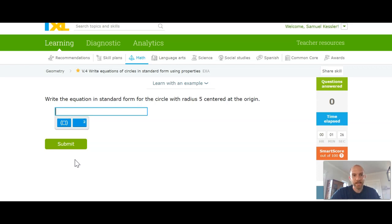Hello class. Today we are going to look at how to write equations of circles in standard form using various properties. This will be very similar to what we did in V.4, where we looked at how to write the equation of a circle using a graph. But instead of having a graph to look at, we've just got properties and we'll have to interpret that into the equation.